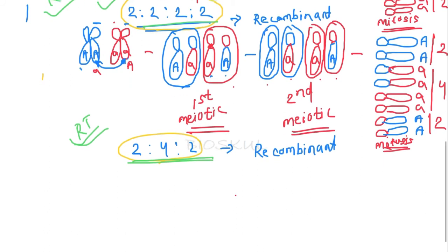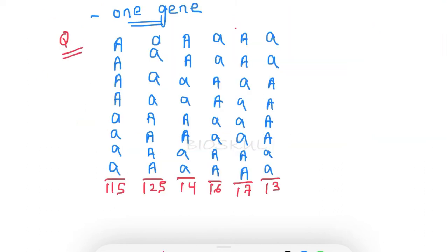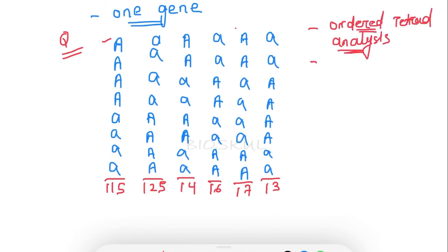Another important point to remember: in ordered tetrad analysis you will find only one gene. If in the question only one gene is present, then that question is about ordered tetrad analysis. Ordered tetrad analysis is used to find out the distance between the gene of interest from the centromere. Let's see an example. If only one gene 'A' is present in the question, be sure that this is an ordered tetrad analysis question to find the gene-to-centromere distance.